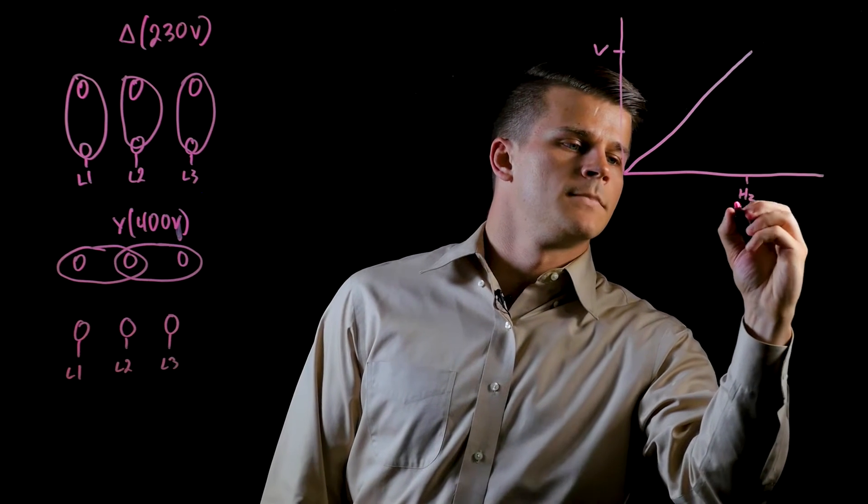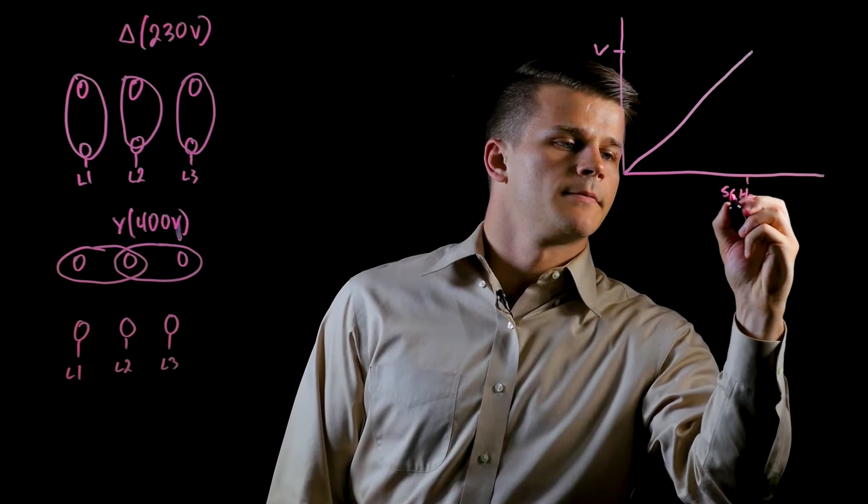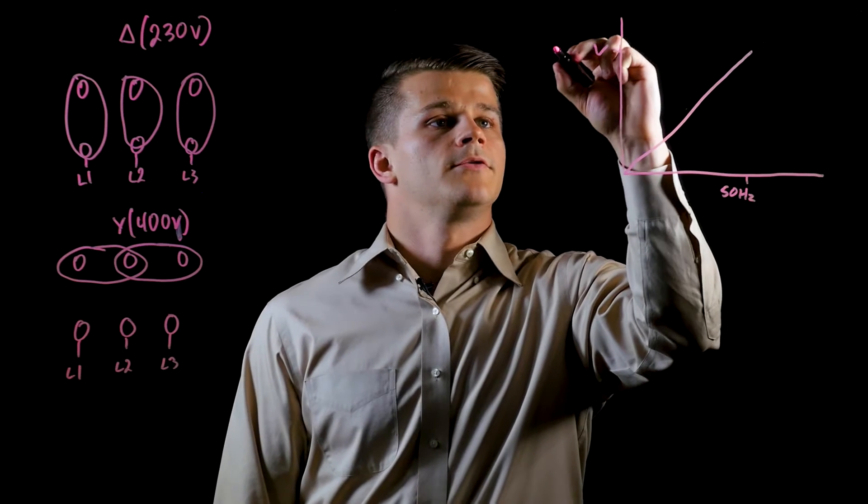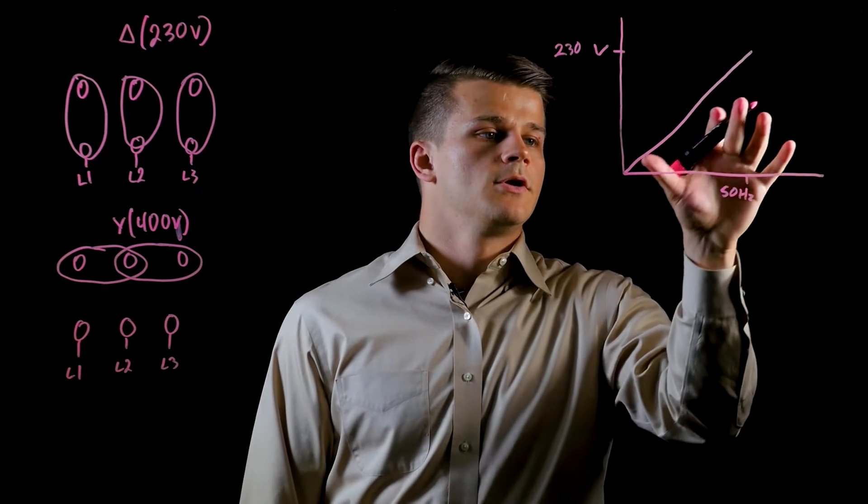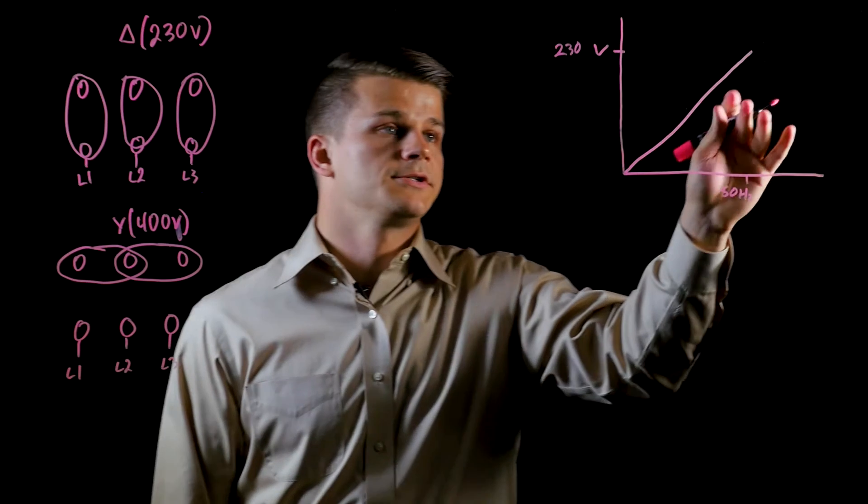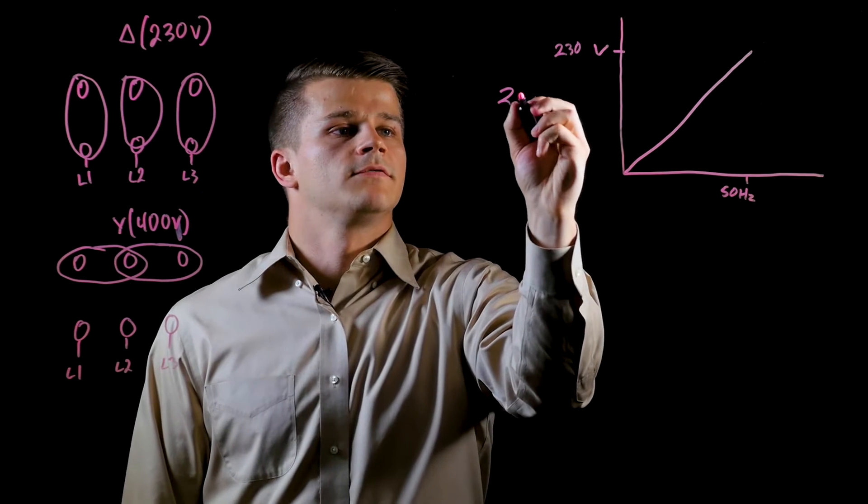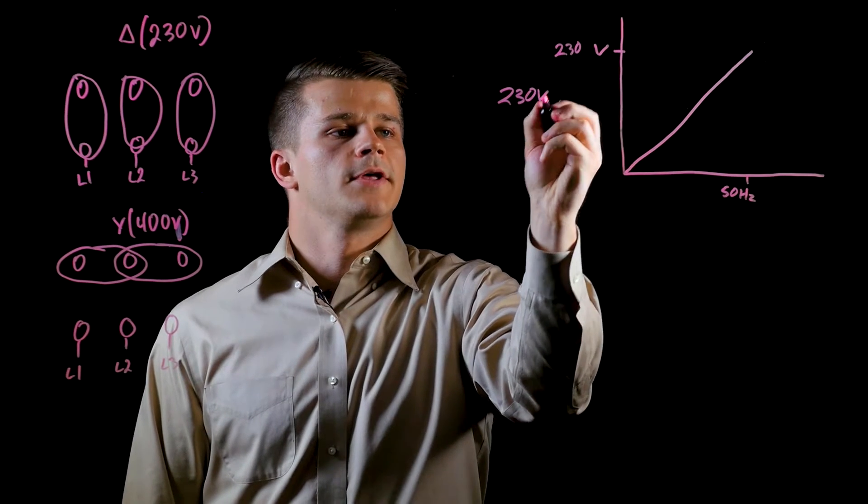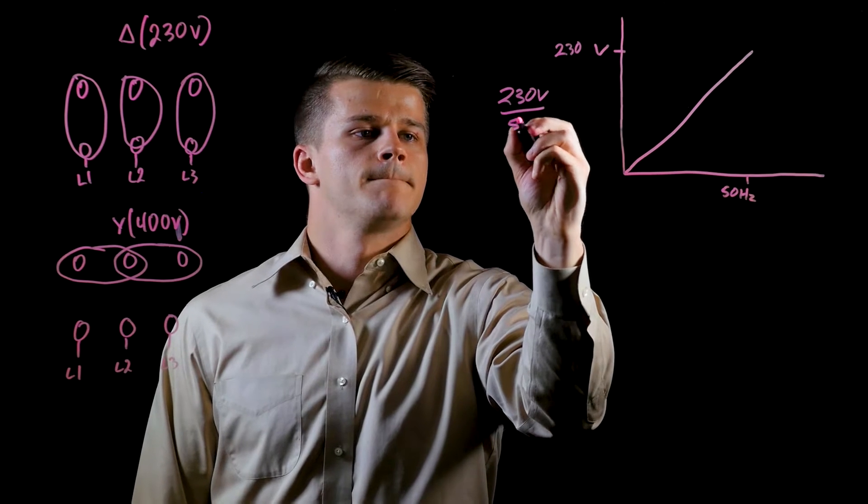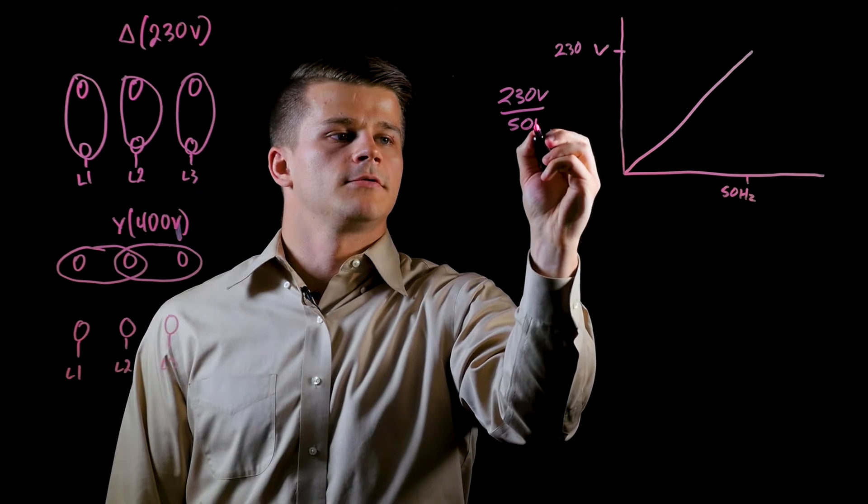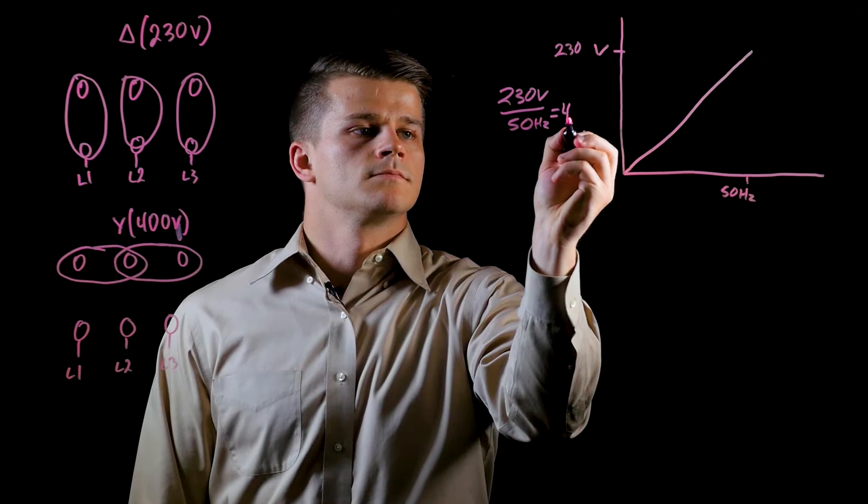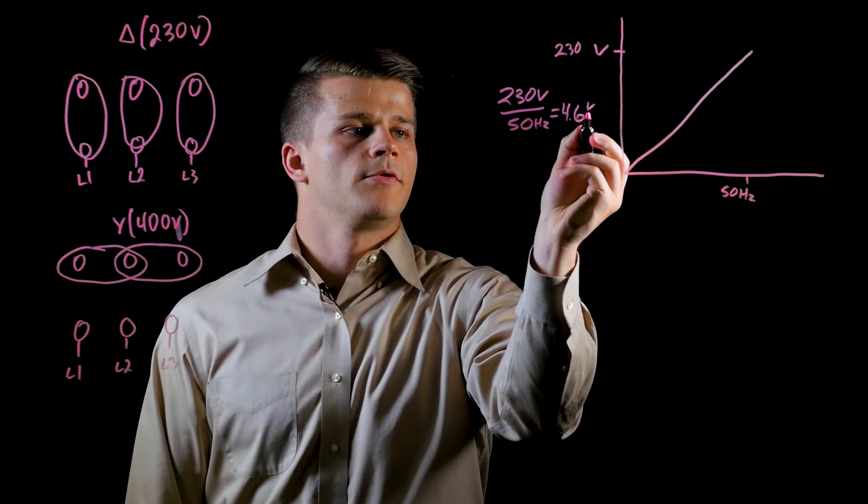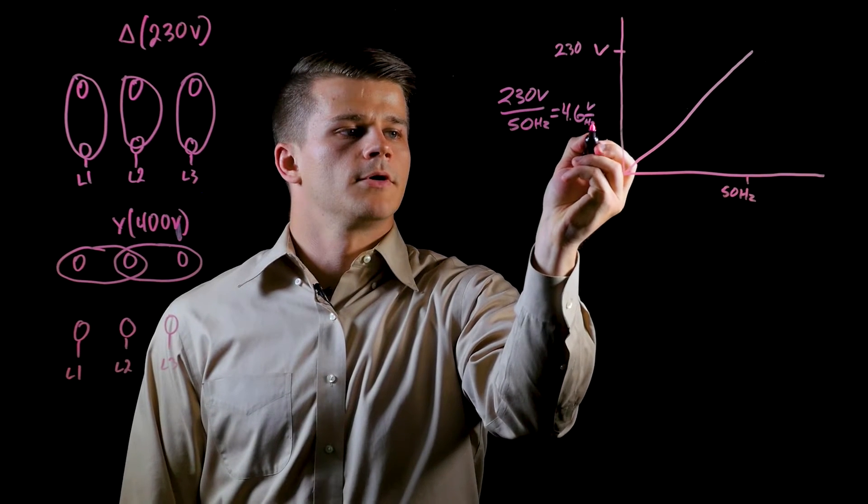Here at 50 Hertz and 230 volts for the Delta configuration, we have this linear relationship of voltage and torque. If we do some quick math, we have 230 volts over 50 Hertz, which equals 4.6 volts per Hertz.